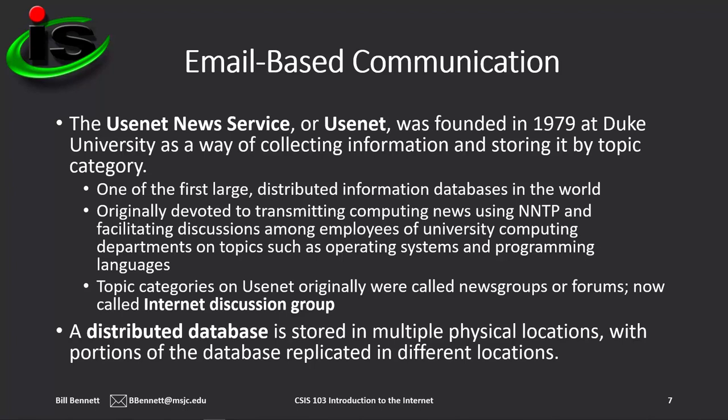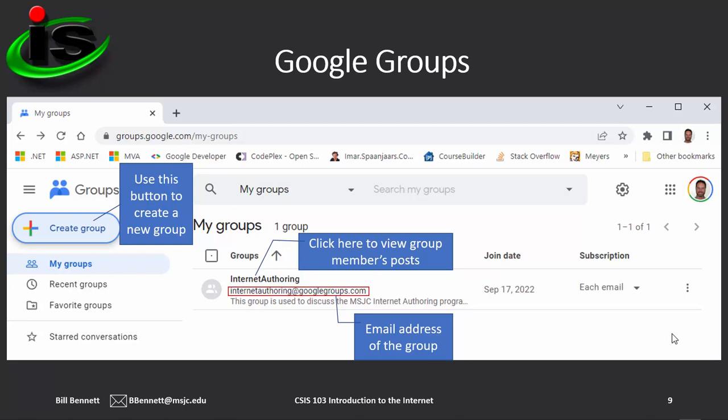People use Google Groups to organize communications for their own groups, such as sports leagues, study forums, or project teams. To create a group, visit groups.google.com, click the Create button, and follow the on-screen steps. On your screen is an example of the Google Groups page — you can see the button for creating new groups on the left, and in the middle of the screen is the group created for the Internet Authoring students.